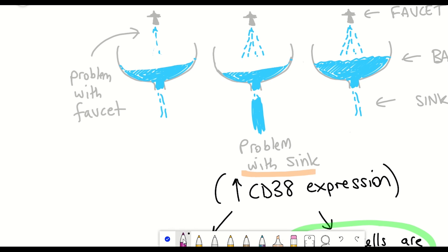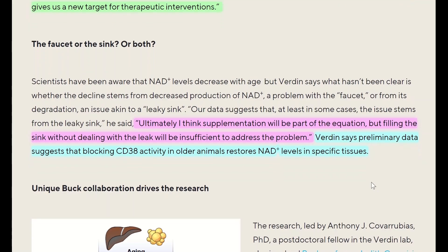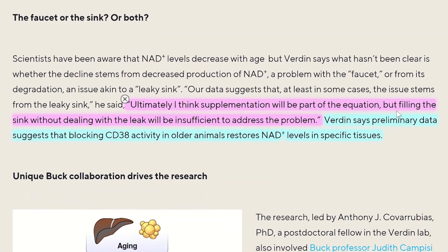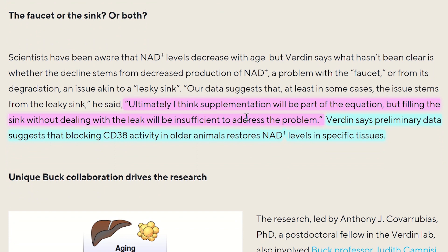One way to compensate for a decline in NAD plus levels of aging is to supplement with NAD plus precursors. So what Eric says is that ultimately, I think supplementation will be part of the equation, but filling the sink without dealing with the leak will be insufficient to address the problem.